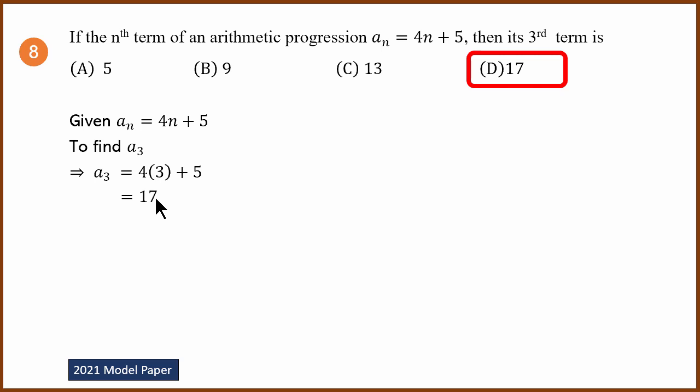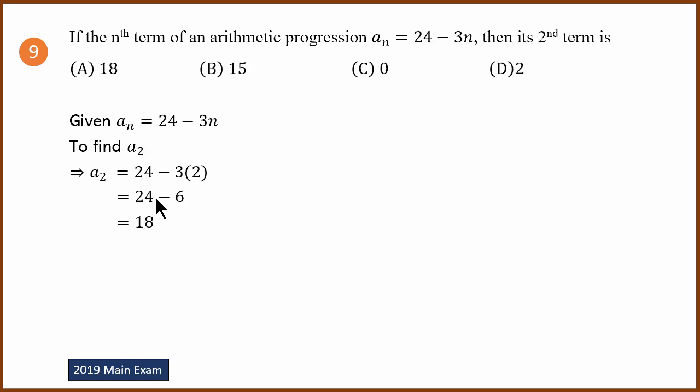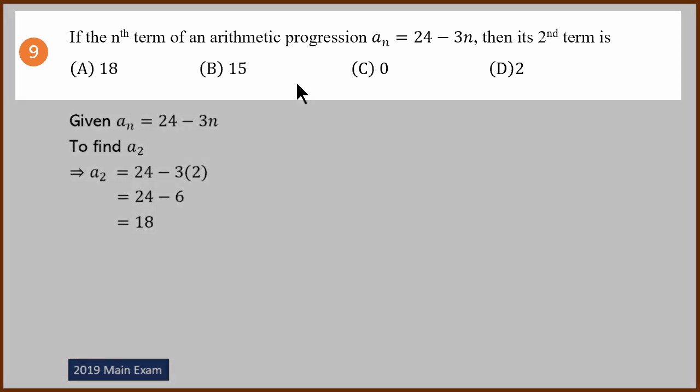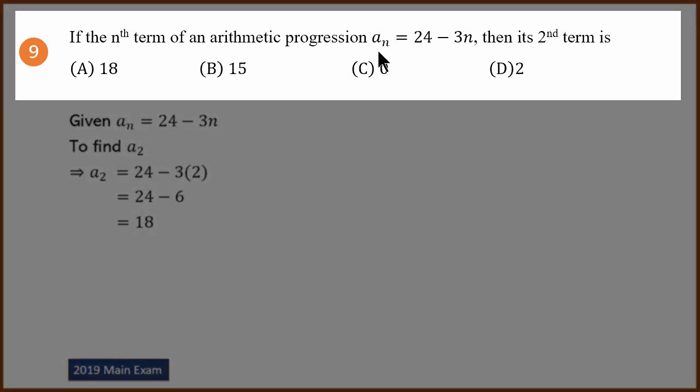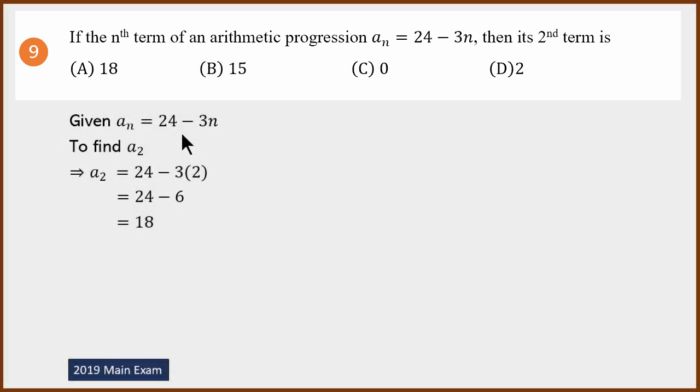2021 model paper, 2019 main exam. Another easy question. Nth term of an arithmetic progression, An is 24 minus 3n. We have to find the second term. 24 minus 3 times 2 equals 24 minus 6, equals 18. The answer is A.